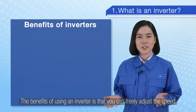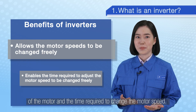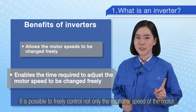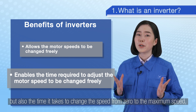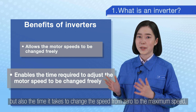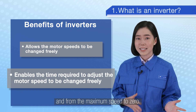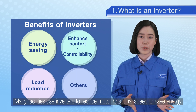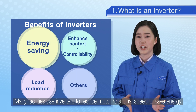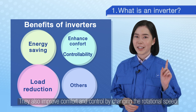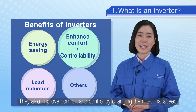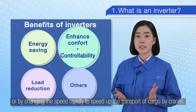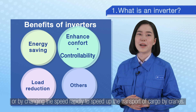The benefits of using an inverter are that you can freely adjust the speed of the motor and the time required to change the motor speed. It is possible to freely control not only the rotational speed but also the time it takes to change from zero to maximum speed and back. Many facilities use inverters to reduce motor rotational speed to save energy and reduce the load on equipment. They also improve comfort and control by changing the rotational speed slowly to enhance ride comfort or rapidly to speed up the transport of cargo by cranes.